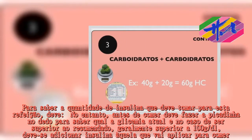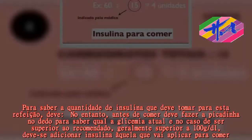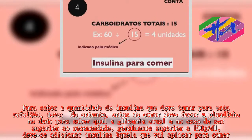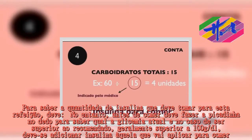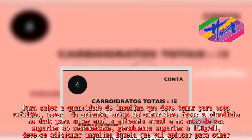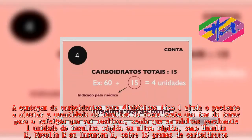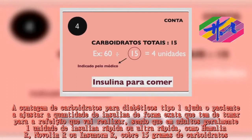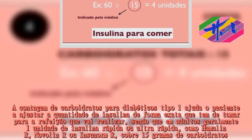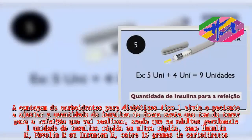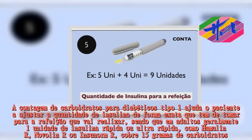A glicemia, no caso de ser superior ao recomendado — geralmente superior a 100 mg/dL — requer adição à insulina calculada para a refeição. A contagem de carboidratos para diabéticos tipo 1 ajuda o paciente a ajustar a quantidade de insulina de forma exata, sendo que geralmente 1 unidade de insulina rápida — como Humulin R, Novalin R ou Novolin R — cobre 15g de carboidratos.